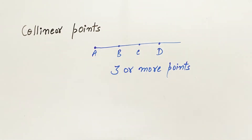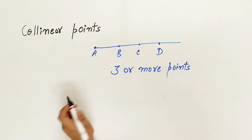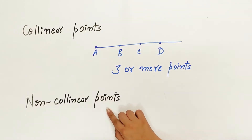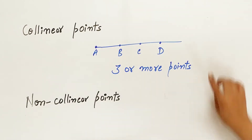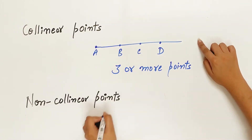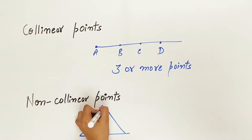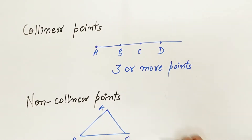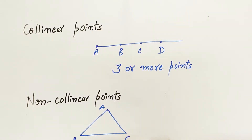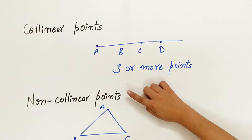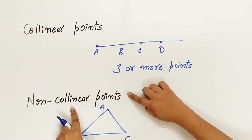Let's look at non-collinear points — that is the opposite of collinear points. Non-collinear points do not lie on the same line. For example, in a triangle, A, B, and C do not lie on the same line, hence they are non-collinear.